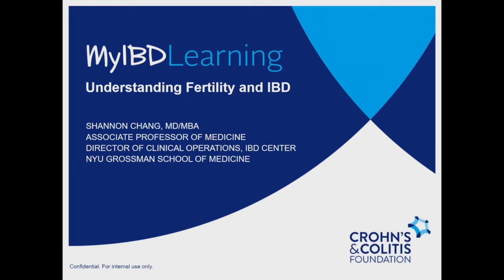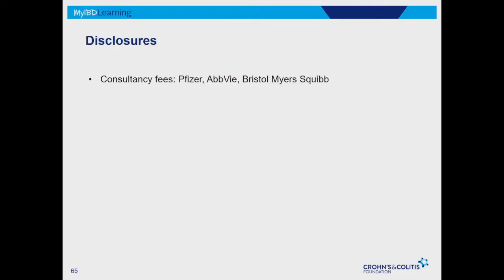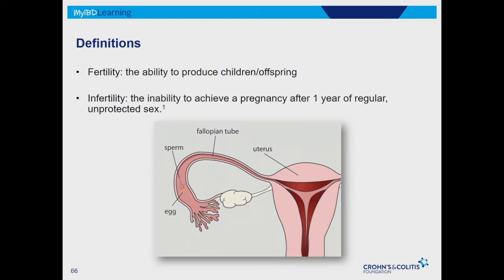I hope that it can be informative. Feel free to write on those pieces of paper any questions you have as they come up. So let's start off with just some definitions. Fertility is defined as the ability to produce offspring or children. And infertility is the inability to achieve a pregnancy after one year of unprotected regular sex.